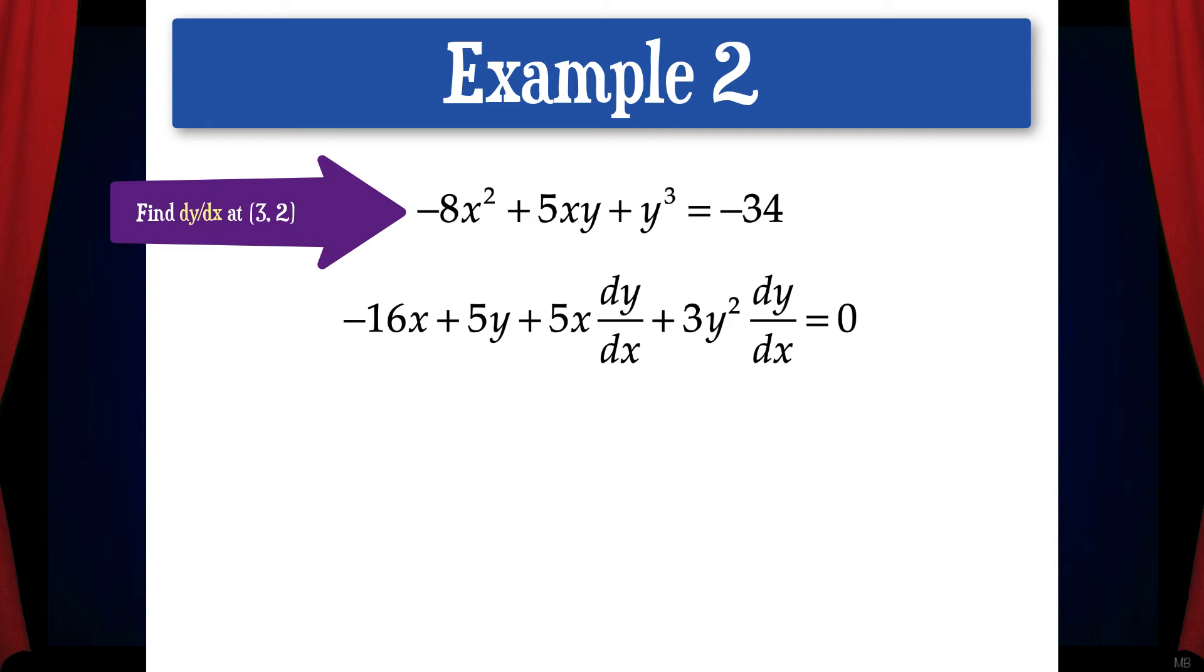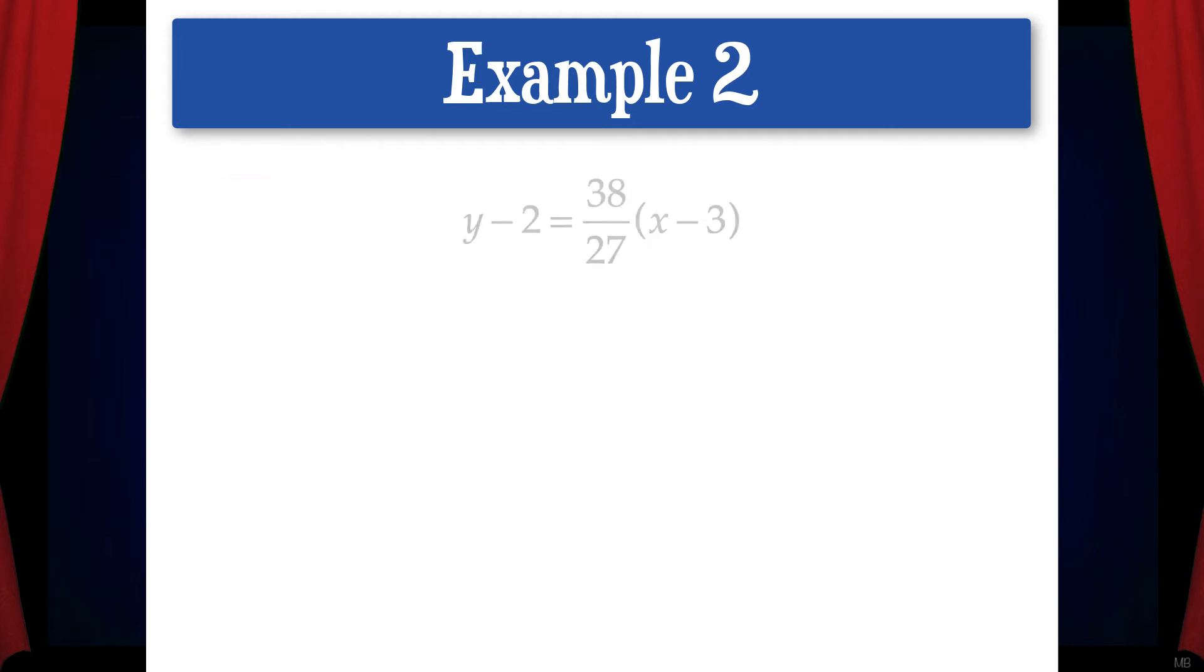Note that we had to use the product rule on the middle term. Then we need to solve for dy/dx when x is 3 and y equals 2. When we do this, we get dy/dx equals 38 over 27. Now we can find the linearization equation.